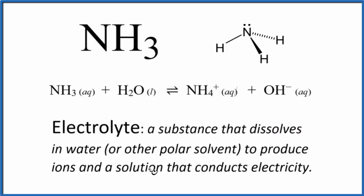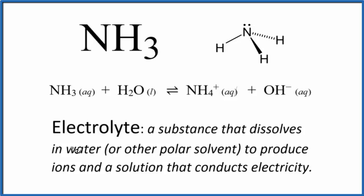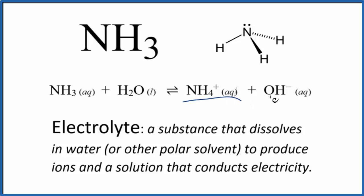It produces ions, and these ions allow electricity to be conducted through the water. When you put ammonia in water, it will actually react — it'll set up an equilibrium, and you'll have the ammonium ion (aqueous) and the hydroxide ion (aqueous) as well.